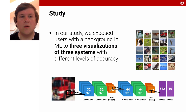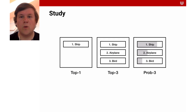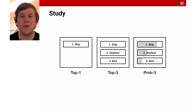In our study, we exposed users with a background in machine learning to three visualizations of three systems with different levels of accuracy. The systems were trained on the CIFAR-10 dataset. Participants were shown one image and one visualization at a time. The top one visualization shows the prediction with the highest probability, minimizing complexity and cognitive load by giving a simple, action-oriented answer. It is similar to the user interface of object recognition systems like Google Photos.